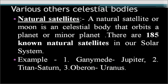Various celestial bodies include natural satellites. A natural satellite or moon is a celestial body that orbits a planet or minor planet. There are 185 known natural satellites in our solar system, though others are yet to be discovered. Examples include Ganymede, which is the moon of Jupiter, and Titan, which is the moon of Saturn.